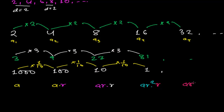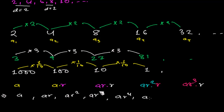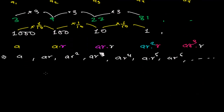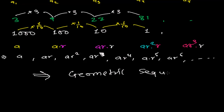Continuing: the fourth term is ar³, and multiplying by r gives the fifth term ar⁴. So overall our sequence is: a, ar, ar², ar³, ar⁴, ar⁵, ar⁶, and so on. Such a sequence is always called a geometric sequence or geometric progression.